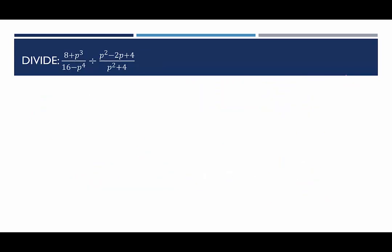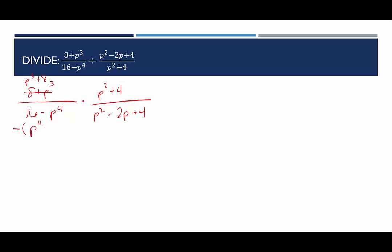In our last example, rewrite as multiplication first: (8 plus p cubed) over (16 minus p to the fourth), times (p squared plus 4) over (p squared minus 2p plus 4). I notice the left fraction has the constant first and variable term second. Since the numerator uses addition it's commutative, so we can rewrite p cubed plus 8. For 16 minus p to the fourth, flipping gives negative p to the fourth plus 16 — we don't want that negative leading term — so factor out negative 1, leaving negative(p to the fourth minus 16).